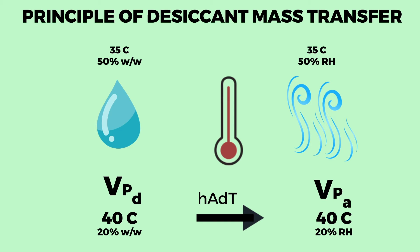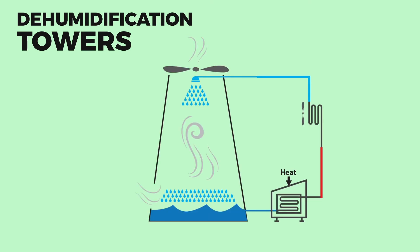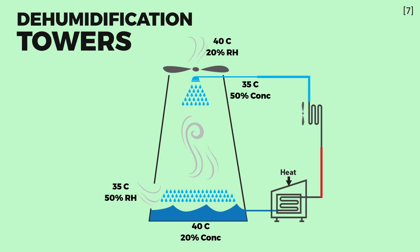Now we know exactly what happens when a desiccant solution comes in contact with air and how it dehumidifies, and as a side effect heats air as well. Common practical uses of desiccant-based dehumidification involve cooling towers. A chilled concentrated solution is sprayed at the top of the tower and interacted with air. The air leaves at a slightly higher temperature but drastically reduced humidity, while the desiccant solution leaves at a high temperature and low concentration — essentially diluted. This solution then has to be regenerated and cooled by removing the absorbed moisture and generated heat.